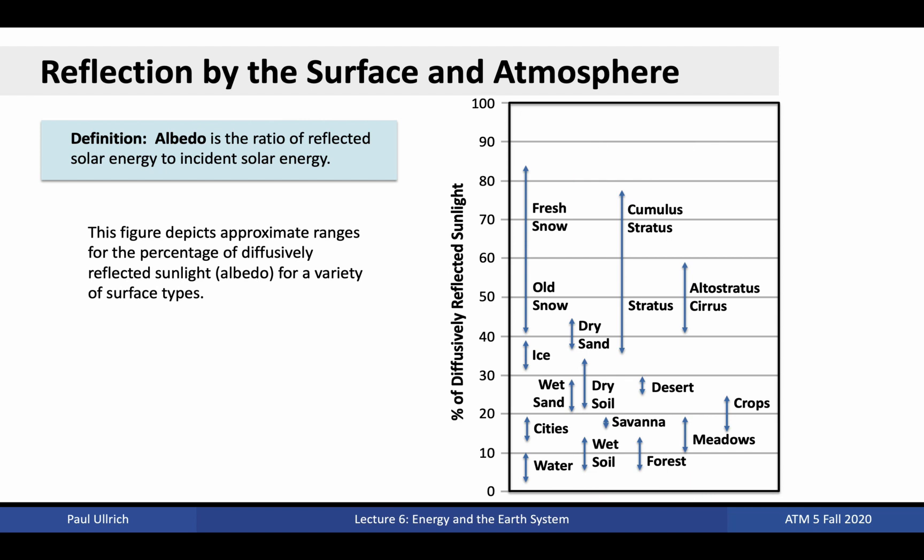Snow and ice have albedos around 30 to 85 percent. Clouds have albedos between 35 and 75 percent. Sandy regions and bare soil have albedos between 20 and 30 percent. Cropland has an albedo of 15 to 25 percent. Cities have albedos of 15 to 20 percent. Forests and wet, dark soils have albedos between 5 and 15 percent. And water has an albedo of 2 to 10 percent.